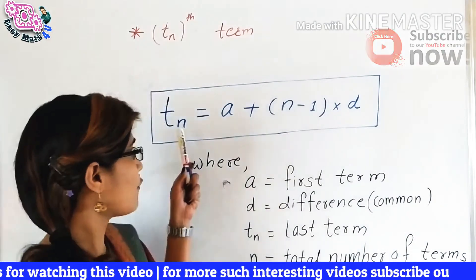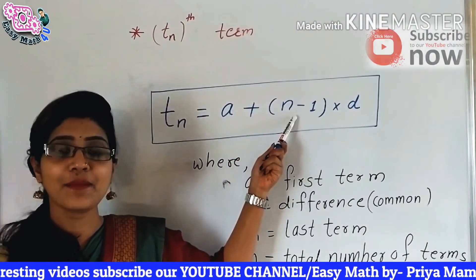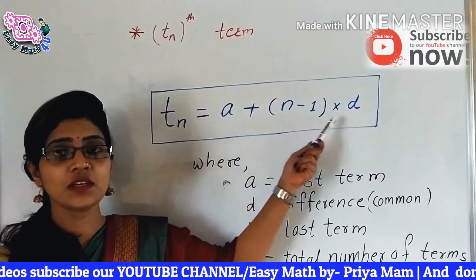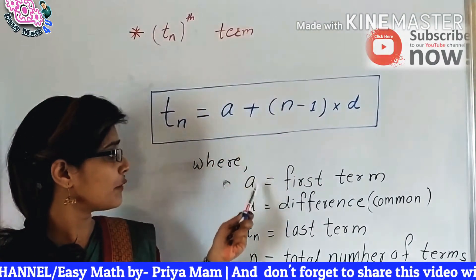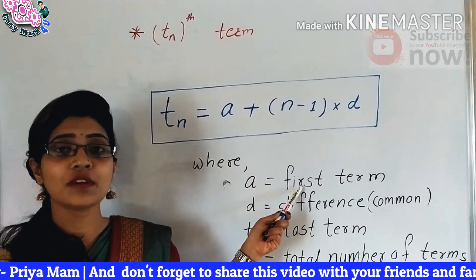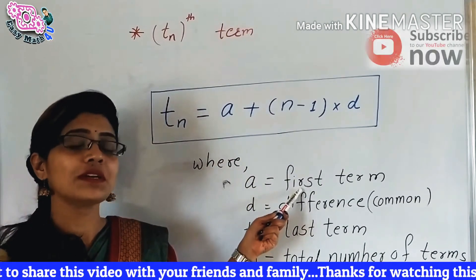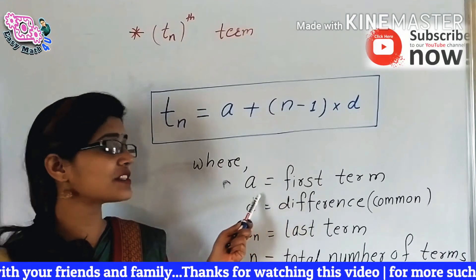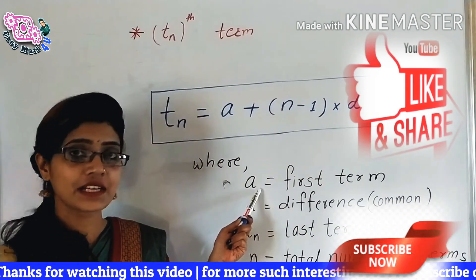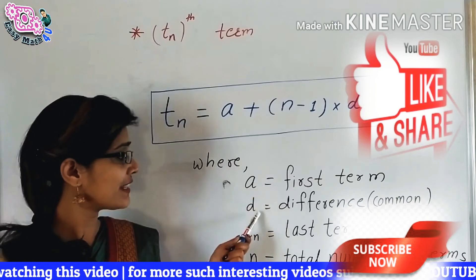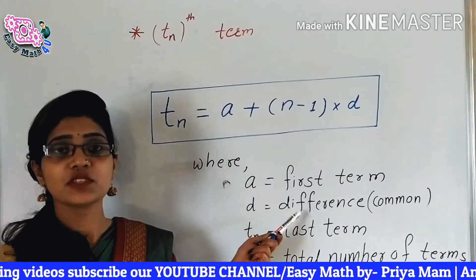The T of n is equal to a plus n minus 1 of d. Where a is equal to the first term — whatever your sequence, you have to consider the first term as A. Next, D. D is the difference, that is the common difference.